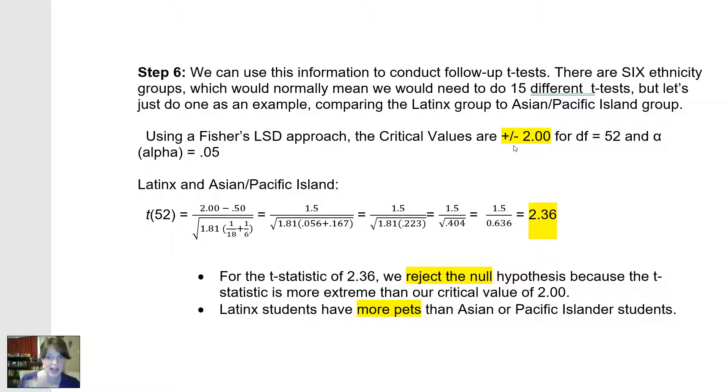So then I just calculate. I subtract, and then I do 1 over 18, and then I do 1 over 6 to get these two decimals, add them together. Then I multiply that by 1.81, which again is the mean square within. Then I do the square root of the product, which is 0.404, to get 0.636. So first I get rid of my fractions, then I add the two decimals together, then I multiply these two numbers together to get this value here, 0.404, then I take the square root of it to get my standard error for this independent samples follow-up t-test.